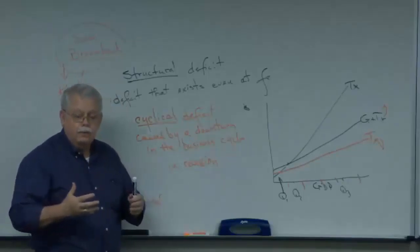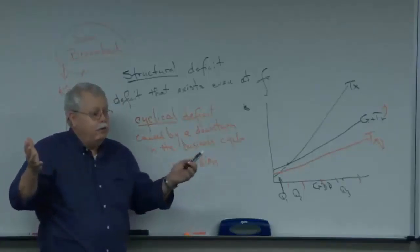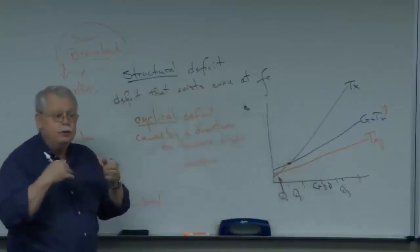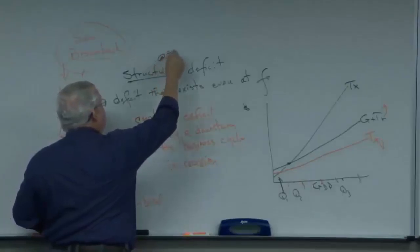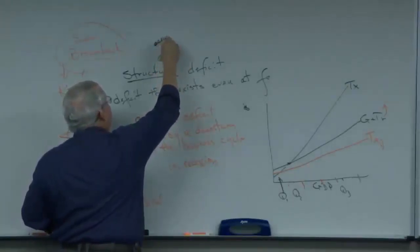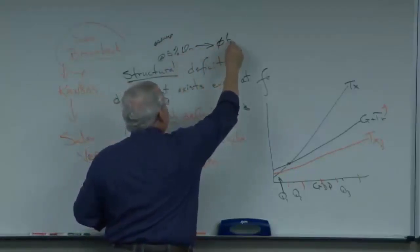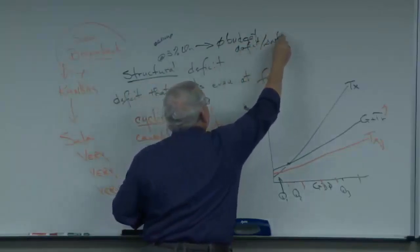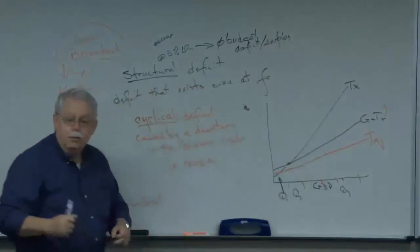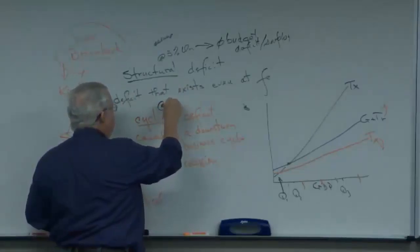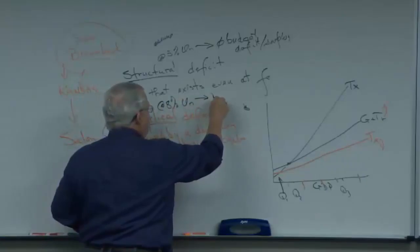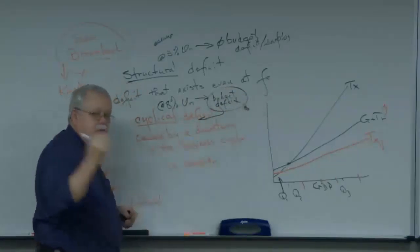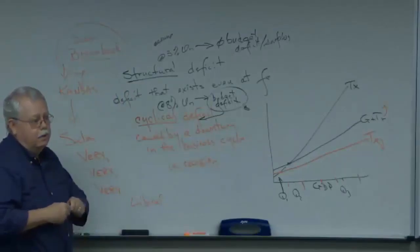Suppose the unemployment rate, the full employment rate, is 5% unemployment. And suppose we had taxes and spending such that we would be running a balanced budget. So, at 5%, we're assuming, right, at 5% unemployment, no budget deficit, no surplus. We have a balanced budget. But then when we get unemployment that goes up to 8%, the budget goes into deficit. This, then, is a cyclical deficit caused by the economy going into a dip.